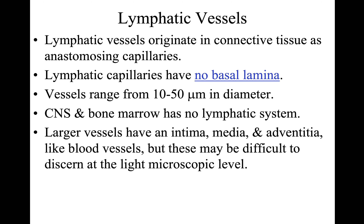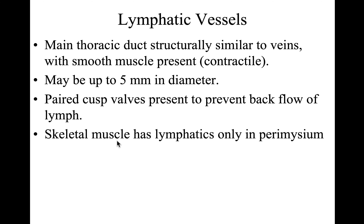The main duct of the lymphatic vessels is the thoracic duct, which is structured similarly to veins — it has tunica intima, media, and adventitia — and contains smooth muscle in its tunica media. Its diameter is about 5 millimeters. It contains valves to prevent backflow of lymph. Skeletal muscle has lymphatics only in the perimysium layer.